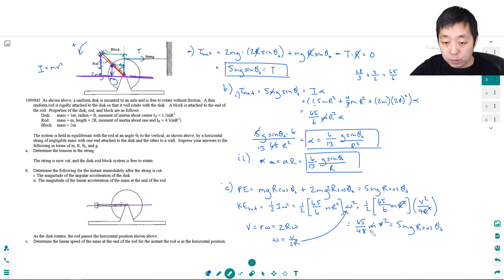So then if I solve, the M's cancel and if I solve for V, I multiply by this. So V squared is equal to 48 over 65 times 5G R cosine theta naught. And so V is equal to the square root of all of this. And that is the linear speed. That was a pretty algebraically and a pretty tricky problem. But hopefully you guys found that helpful. And I will see you all in the next video.